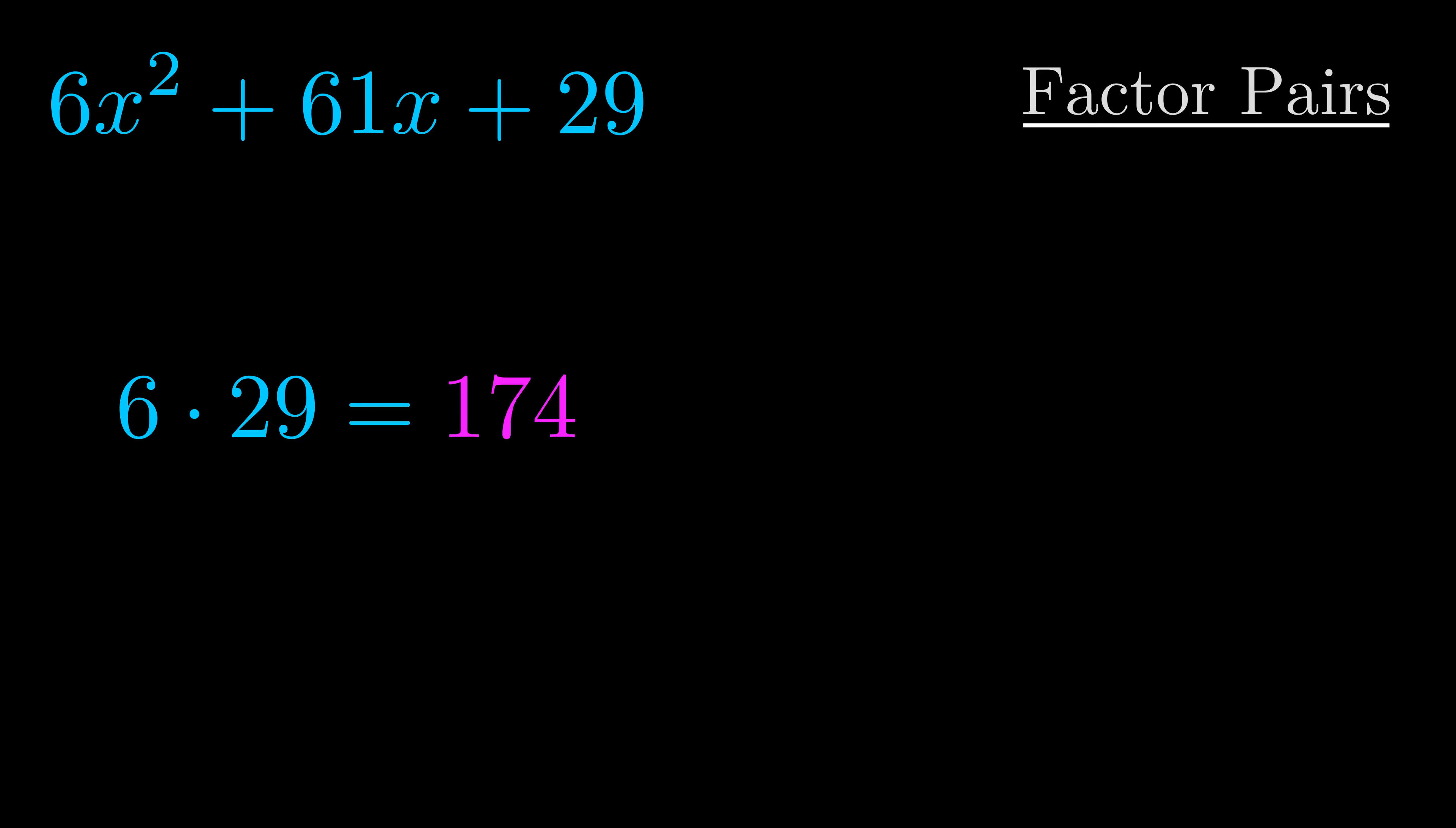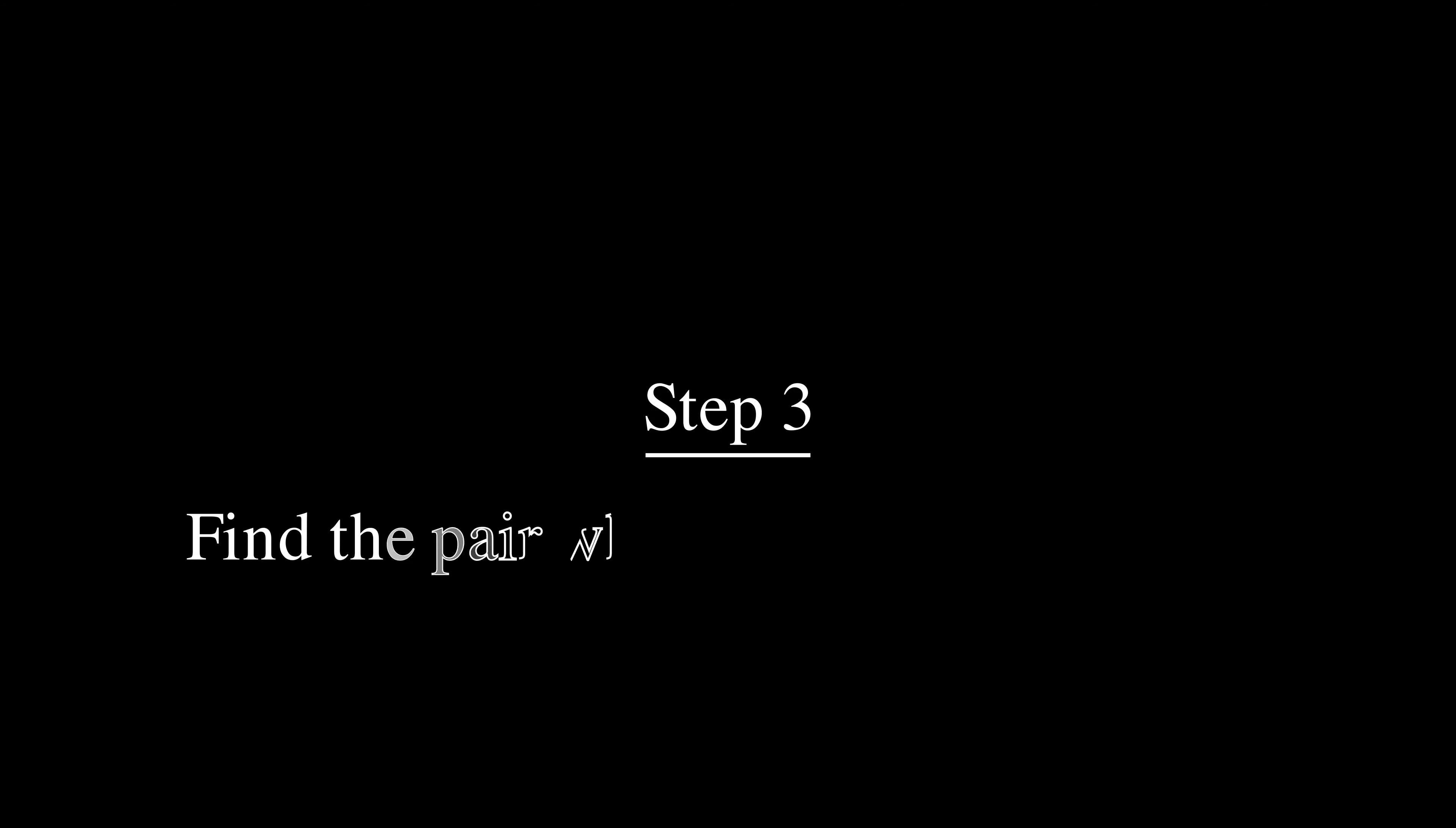Okay here's what I came up with. Now once you have these factor pairs the goal is to find which of these pairs adds to the b value. The b value is the coefficient on the x term.